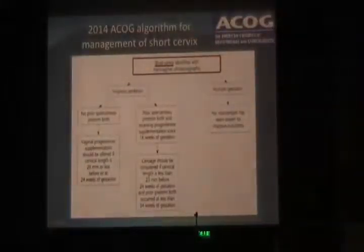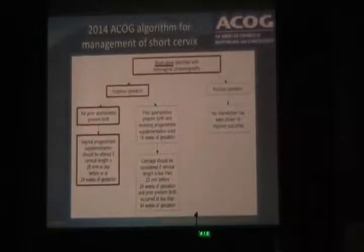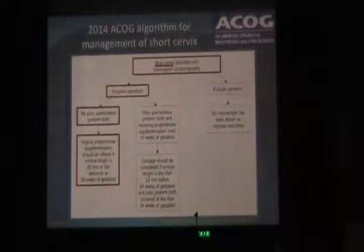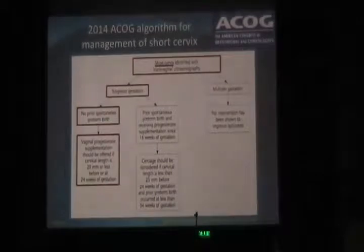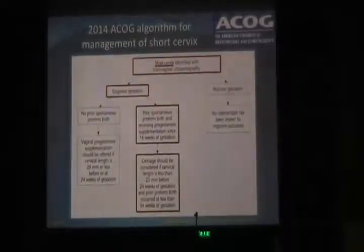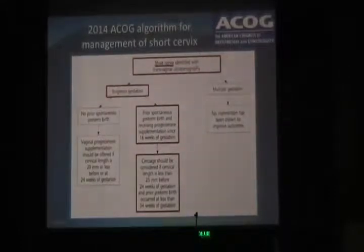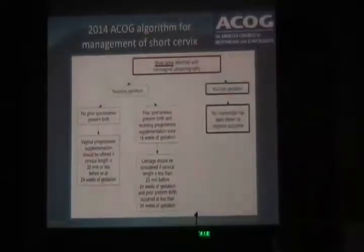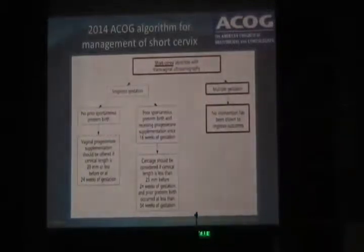This is the official American College algorithm for management of the short cervix in pregnancy. Singleton pregnancies with no previous preterm birth found on routine screening to have a short cervix should be offered vaginal progesterone supplementation, whereas cerclage should be considered in singleton pregnancies with a previous preterm birth who are already on progesterone and who develop a short cervix. Unfortunately, for twins or triplets with a short cervix, no intervention or treatment has been shown to improve outcome.